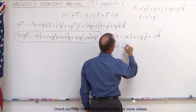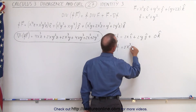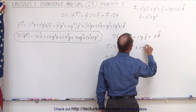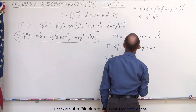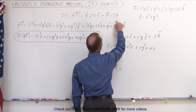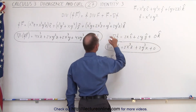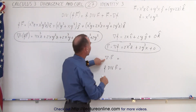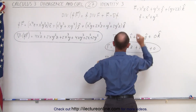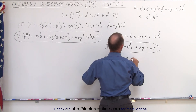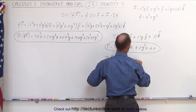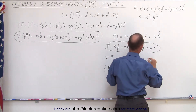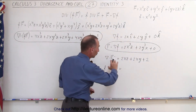Doing that, we get 2x³z from the x components, plus 2y³x from the y components, plus zero. That gives us the F·∇f portion of the right side. Now we calculate the divergence of the vector field: the partial with respect to x gives 2xz, the partial with respect to y gives 2xy, and the partial with respect to z gives 2. Again, taking the divergence yields a scalar quantity.